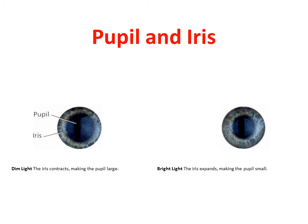The pupil is the part of the eye that looks black. It is an opening through which light enters inside the eye. In dim light the pupil becomes larger to allow in more light. In bright light the pupil becomes smaller to allow in less light.